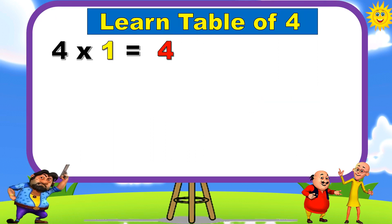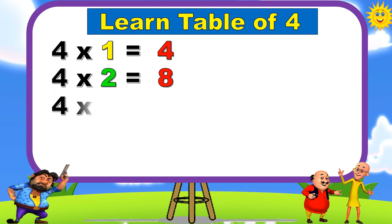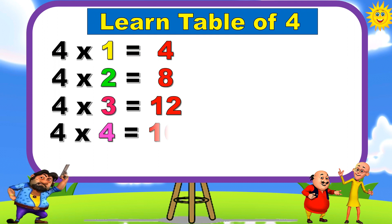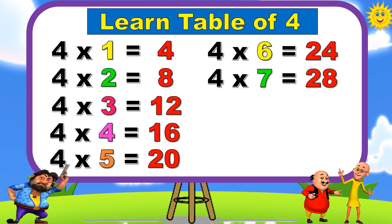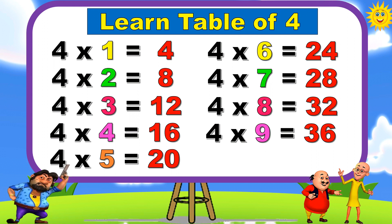Four ones are four. Four twos are eight. Four threes are twelve. Four fours are sixteen. Four fives are twenty. Four sixes are twenty-four. Four sevens are twenty-eight. Four eights are thirty-two. Four nines are thirty-six. Four tens are forty.